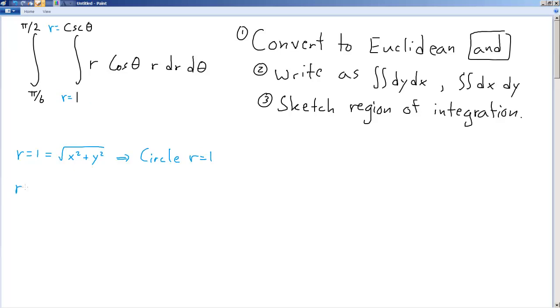Now this weird thing here, R equals cosecant theta. Remember that cosecant theta is 1 over sine of theta. So R equals 1 over sine theta. If I multiply both sides by sine theta, I get 1 equals R sine theta, and R sine theta is really equal to y. So that just tells me that 1 is equal to y. So we've got a circle of radius 1 and y equals 1.